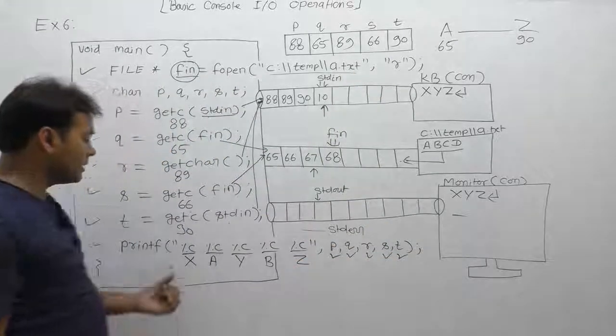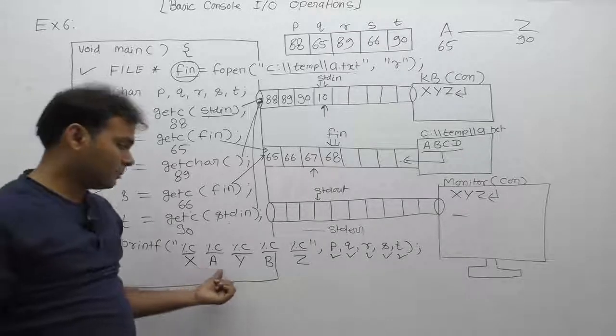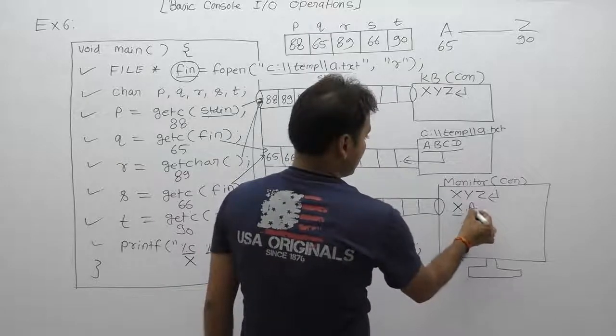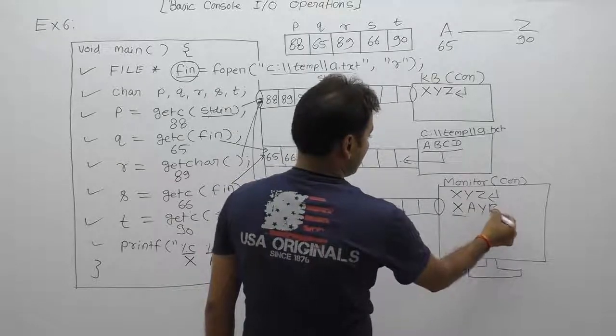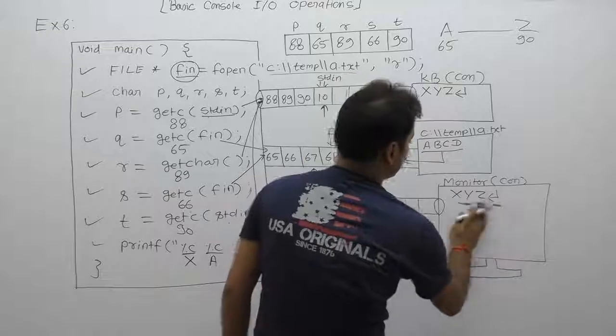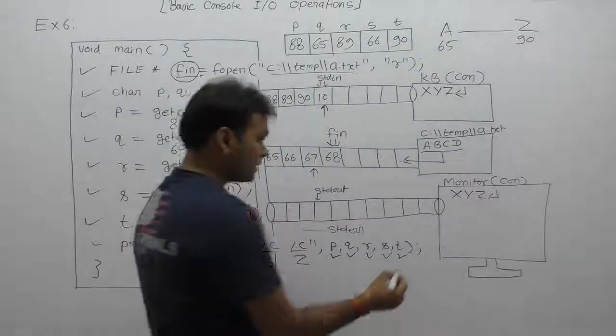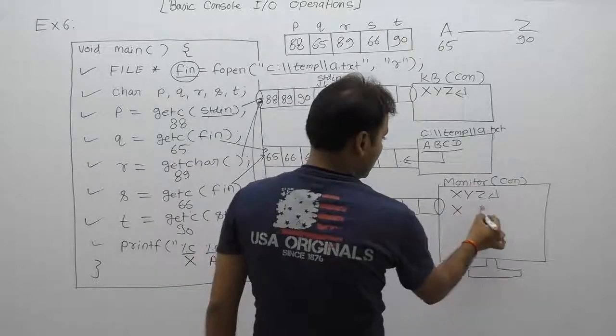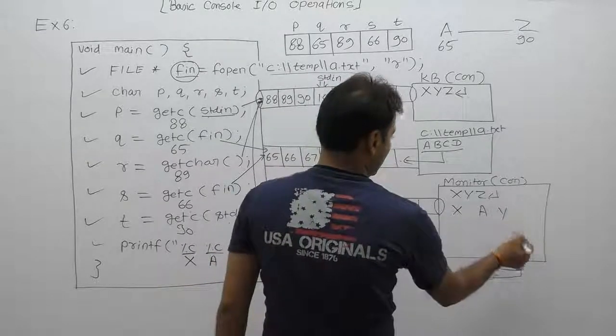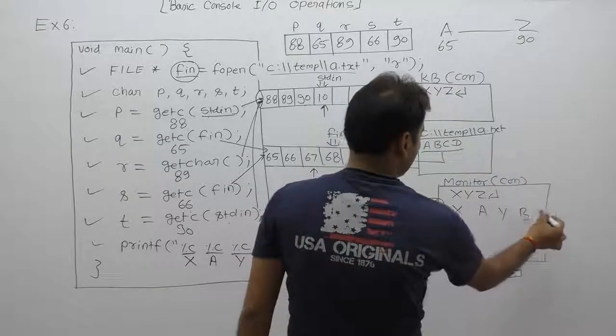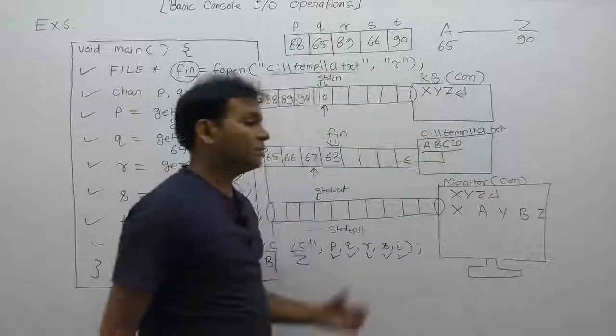Therefore, final output: X, A, Y, B, Z. This is the output: X, A, Y, B, Z separated by spaces. This case, separation by space: X, then A, then Y, then B, and finally Z. This is the output of this program.